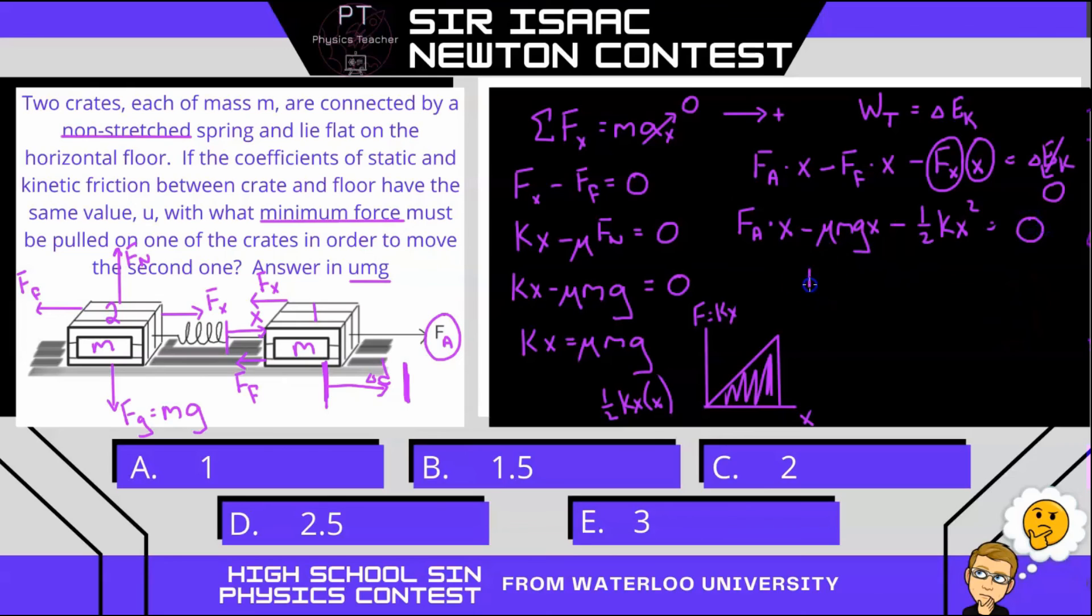Now we can rearrange to solve for F_a. We have mu mg times x plus one-half kx squared equals F_a times x. Dividing through by x, we get F_a equals mu mg plus one-half kx. From analyzing box two, we know that kx equals mu mg. So we have mu mg plus half mu mg, which is three-halves mu mg, or 1.5 mu mg.